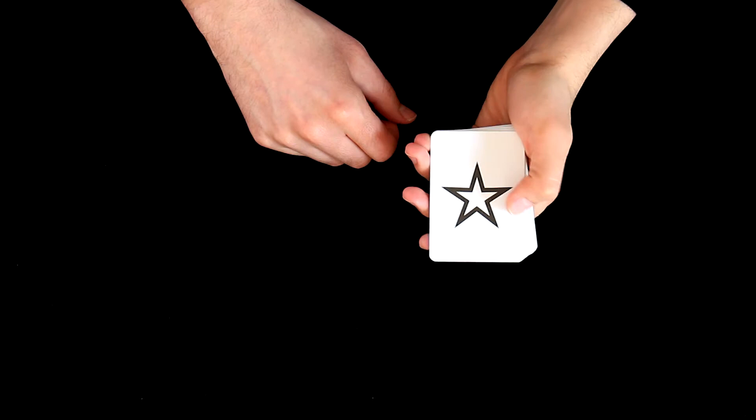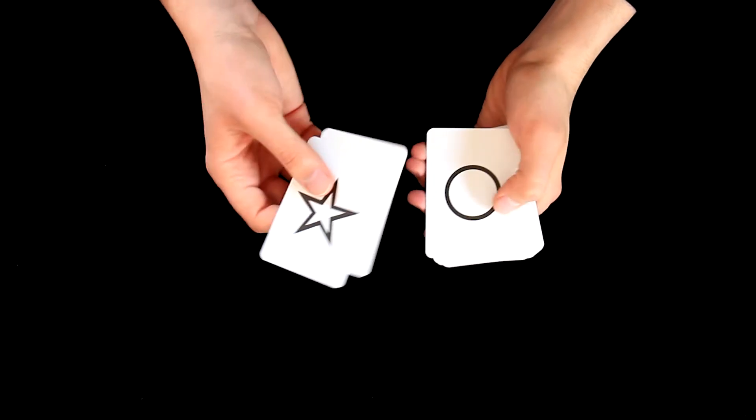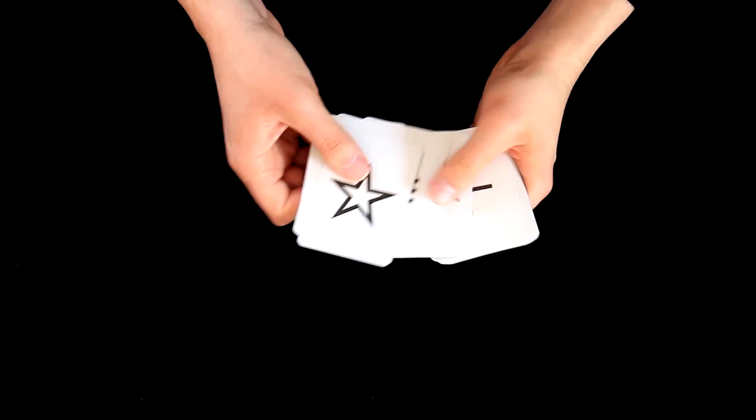For this experiment we need 5 ESP symbols: star, plus, circle, square, and wavy lines.